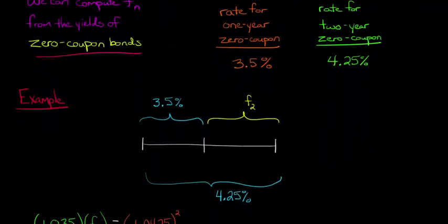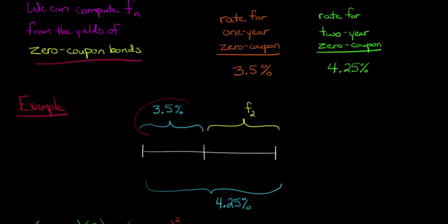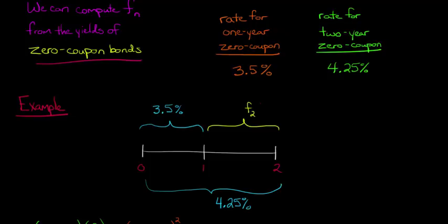Let me put some numbers to it and walk through the concept. If you bought a zero coupon bond for one year — here's year zero, year one, year two — the yield for a one-year zero coupon is 3.5%. But if you instead bought a zero coupon for the whole two-year period, you'd get 4.25%. Now we want to know the rate just for the second portion — from year one to year two. We know the whole thing is 4.25% and the first part is 3.5%, and that missing piece is the forward rate.